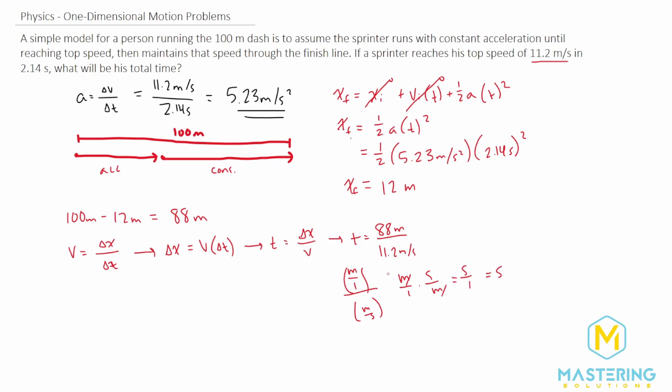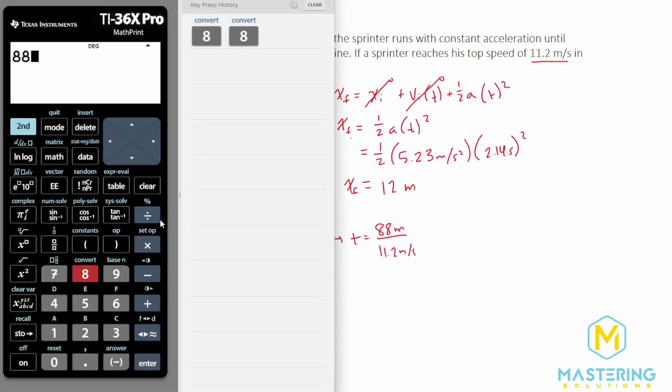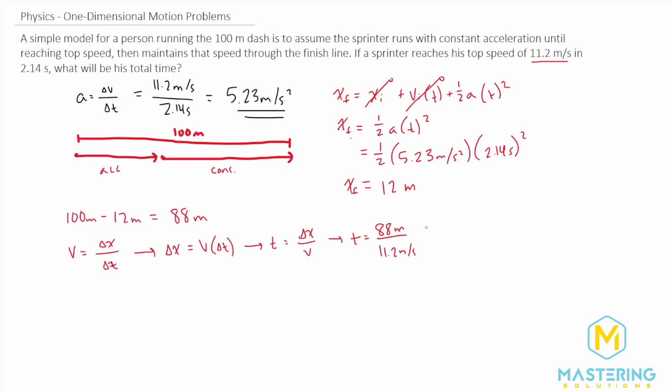So 88 meters divided by his top speed of 11.2 meters per second gives us 7.86 seconds for this section. They gave us 2.14 seconds for the first section.